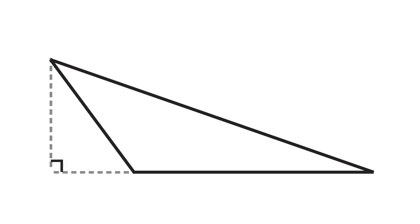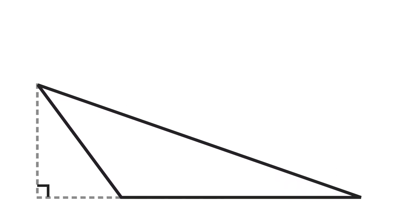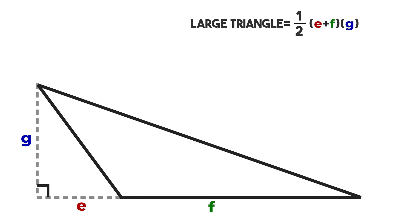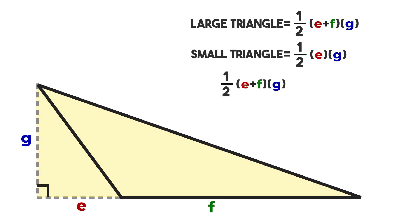Let's add some labels. We'll call this one E, this one F, and this one G. Expressing this algebraically: the area of our large right triangle is one half base E plus F times height G. The area of our small right triangle is one half base E times height G.